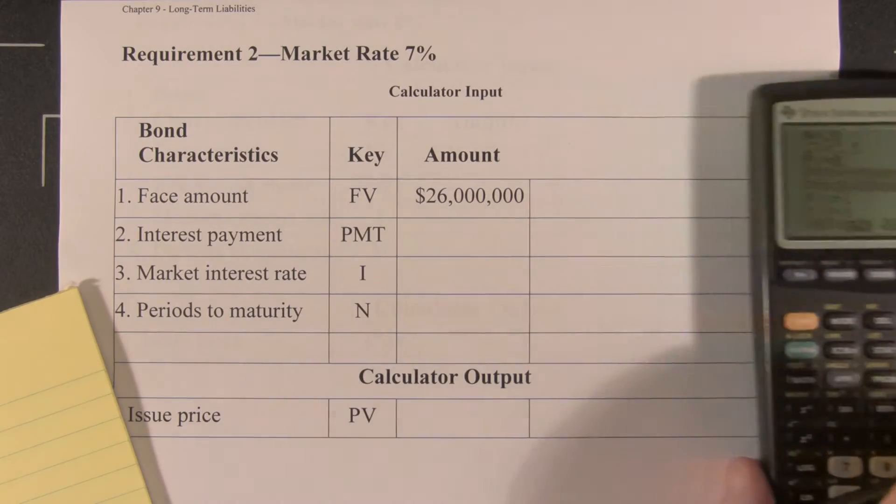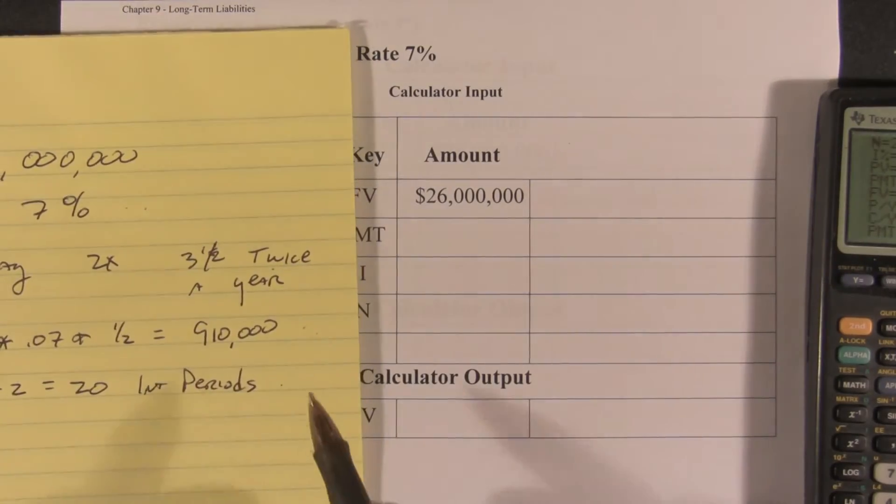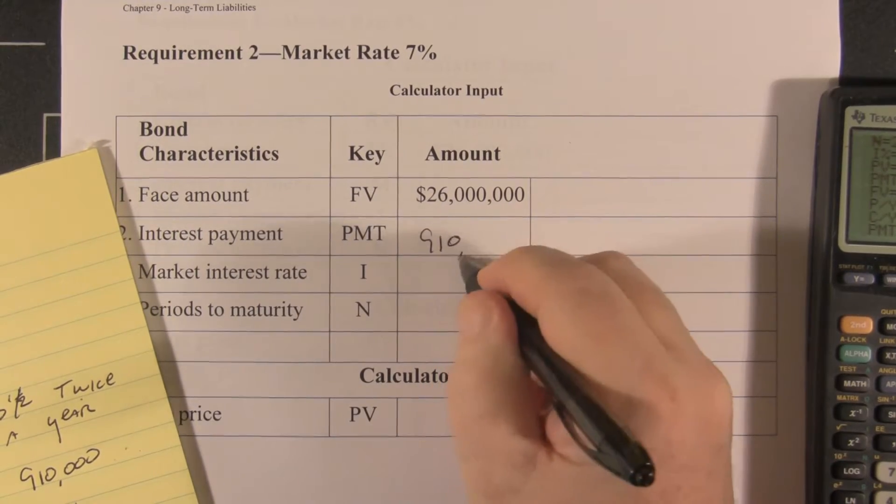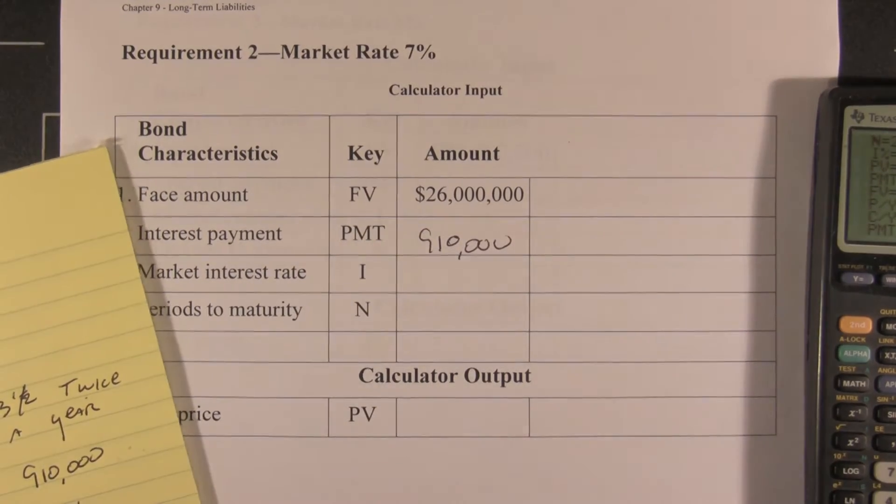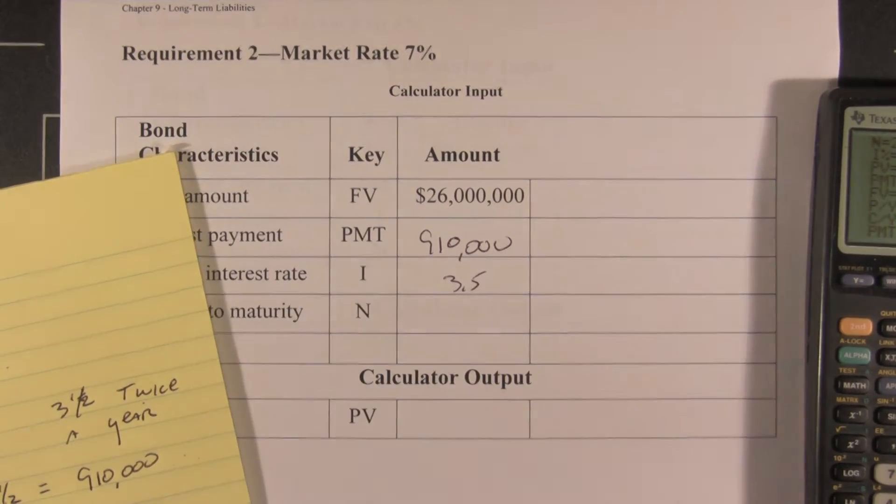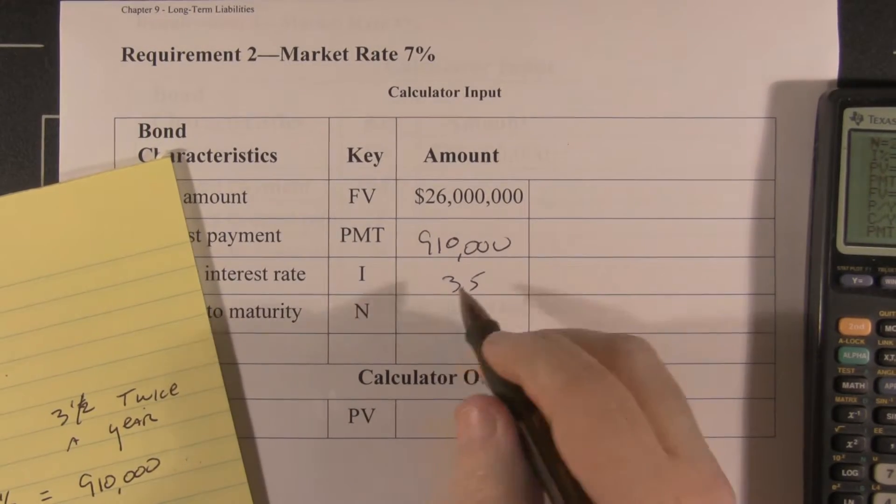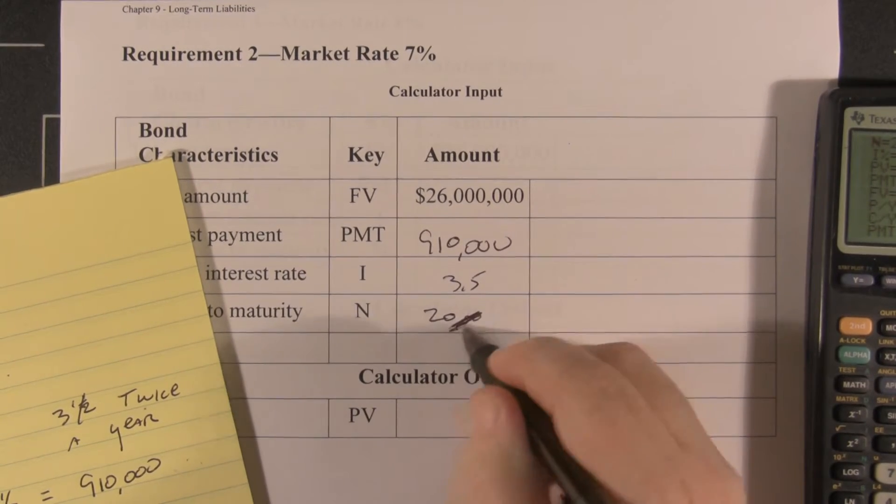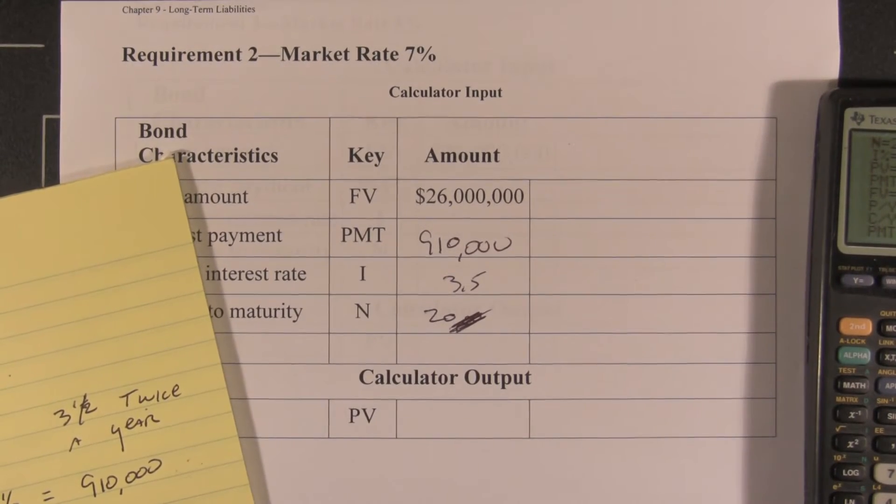So let's fill in the numbers. Our interest payment is still $910,000. Our interest rate is now 3.5% and our interest periods are still 20. Why I was writing $20,000 I don't know.